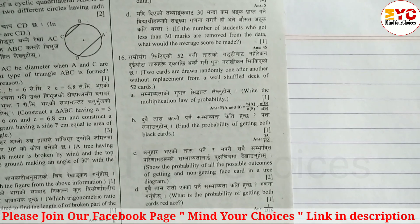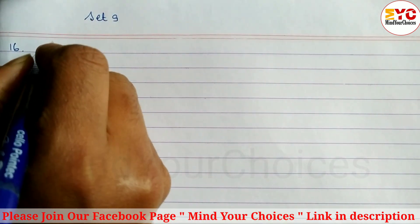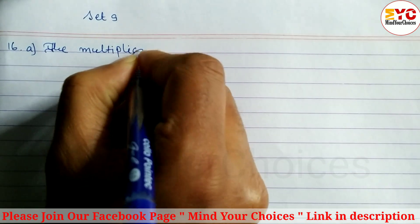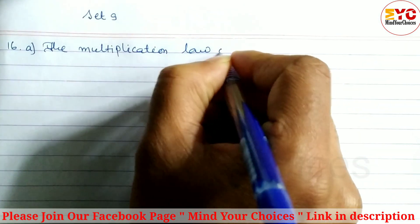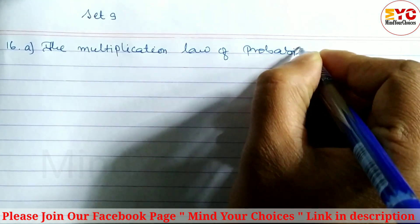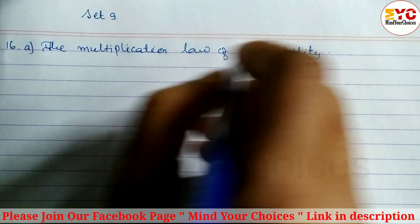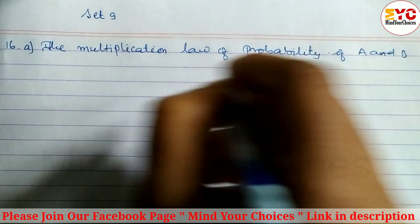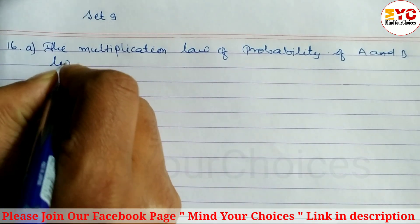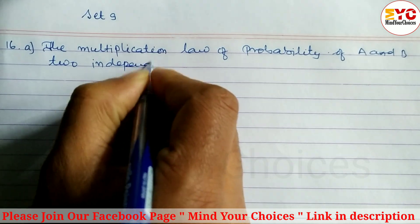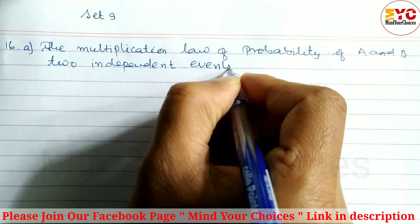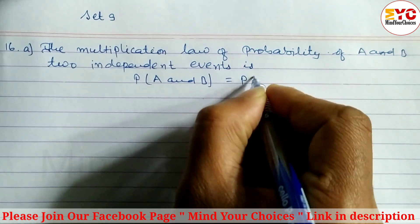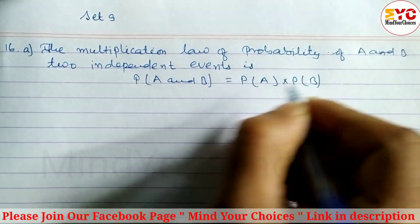Question A: Multiplication law of probability. For two independent events A and B, the multiplication law of probability states that P(A and B) is equal to P(A) into P(B).